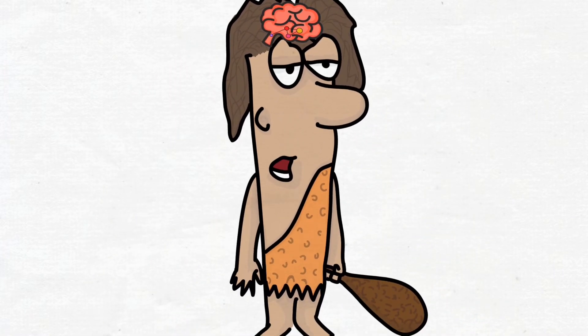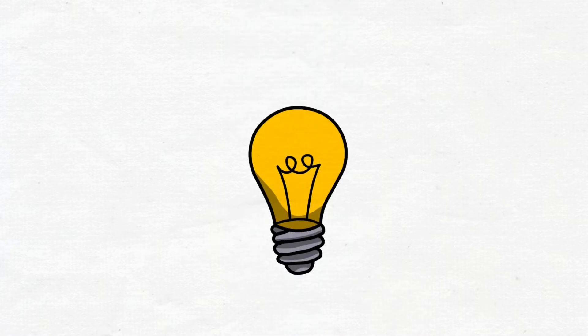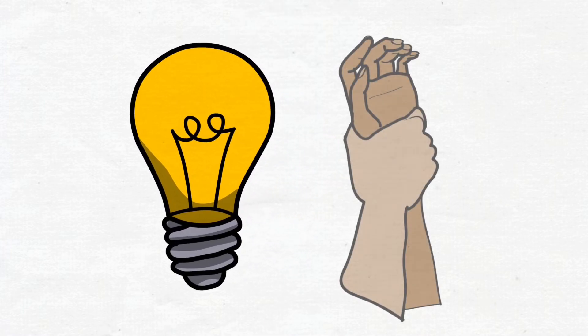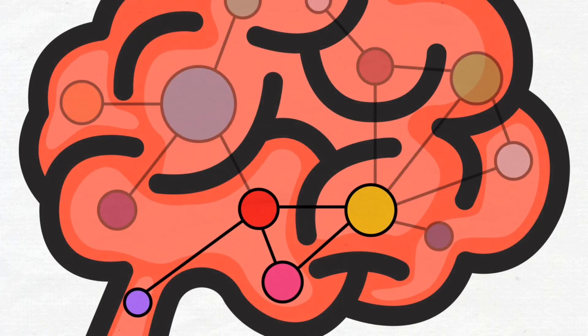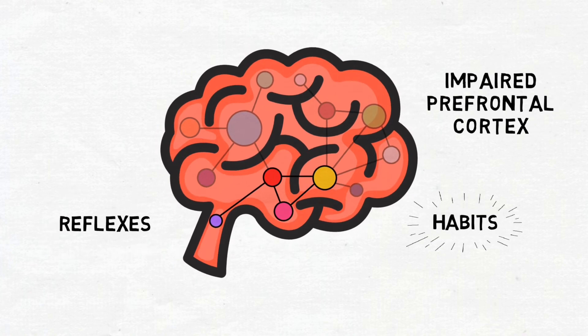If we want to understand the most common, brain-based behaviors of people during sexual assaults, then we need to understand what happens when that defense circuitry dominates their brains and behaviors.